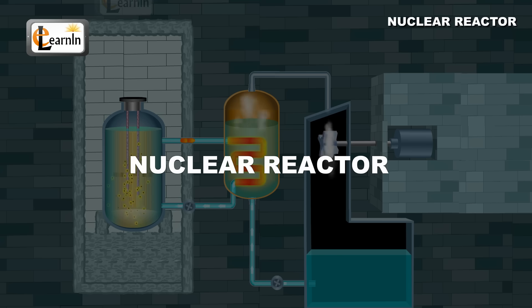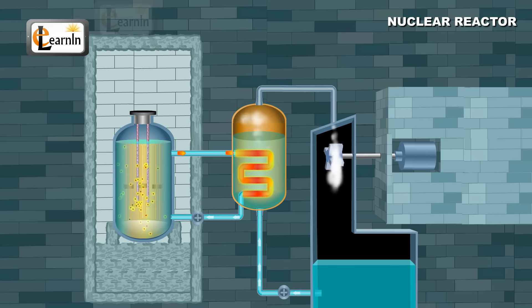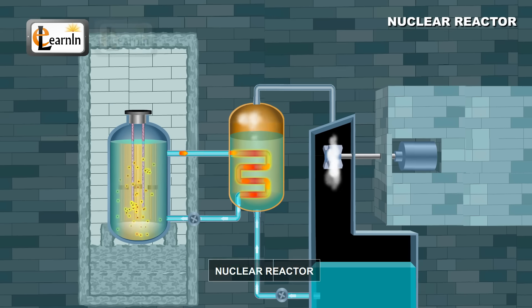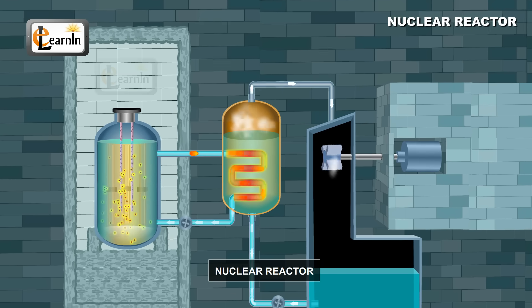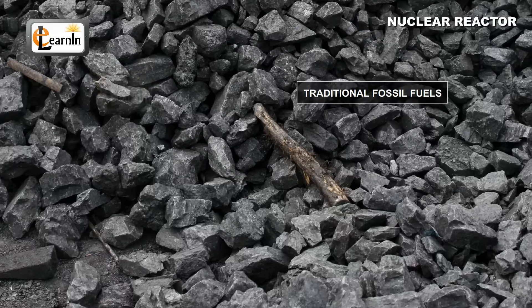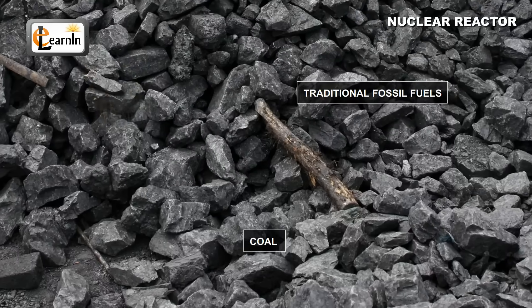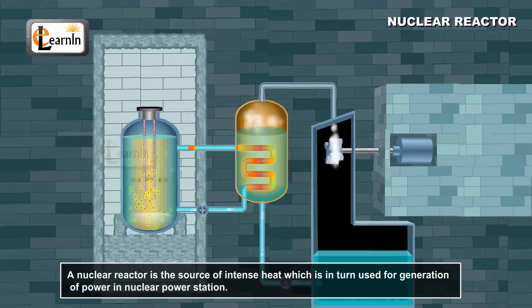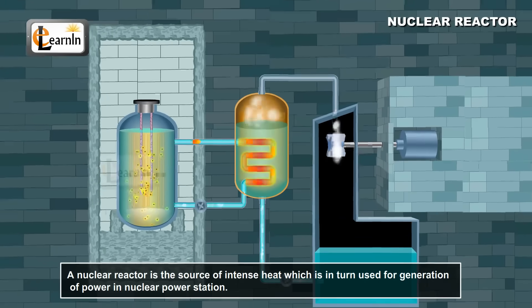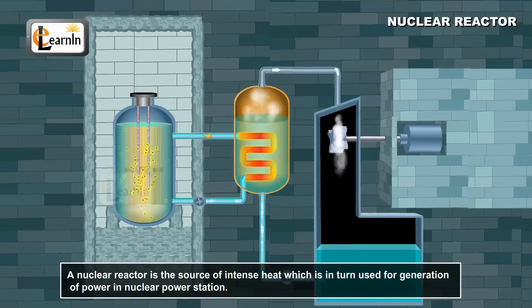Nuclear reactor. In this video we're going to learn about the nuclear reactor. Nuclear reactors are modern day devices extensively used for power generation as traditional fossil fuels like coal are at the breach of extinction. A nuclear reactor is the source of intense heat which is in turn used for generation of power in nuclear power stations.